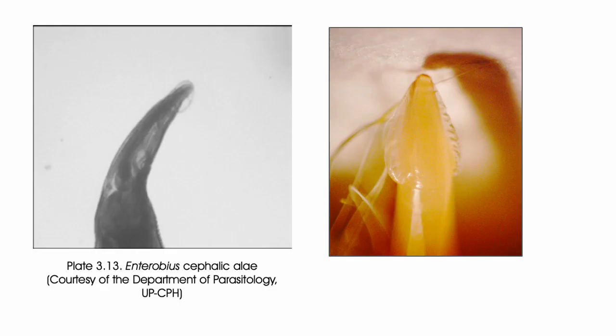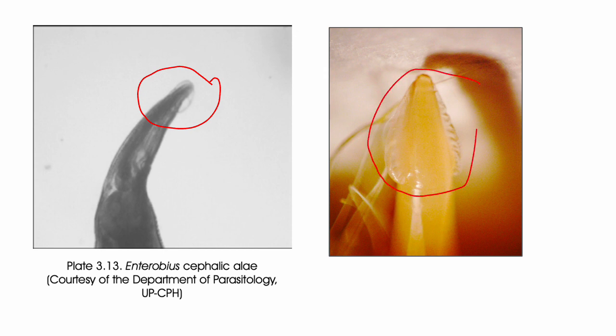The cephalic alae is one of the key characteristics of the adult worm of Enterobius. If you notice an arrowhead-like appearance at the anterior portion of the worm, this is definitely an Enterobius vermicularis adult worm.